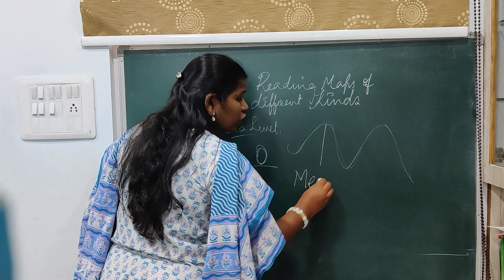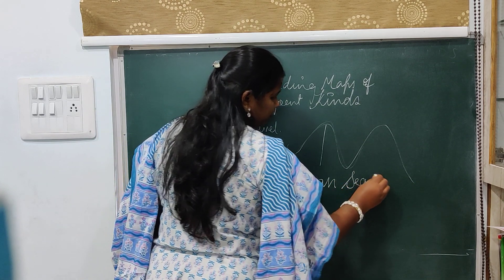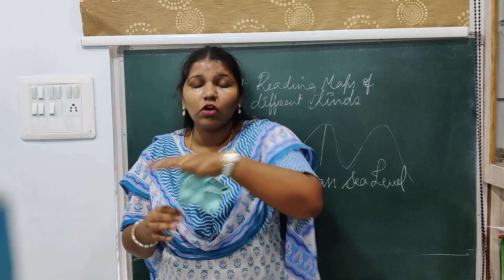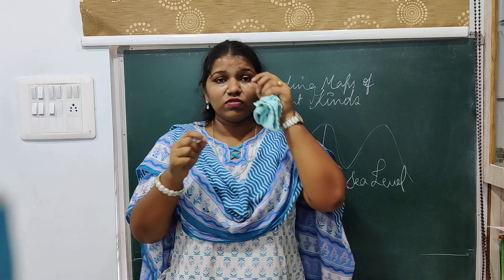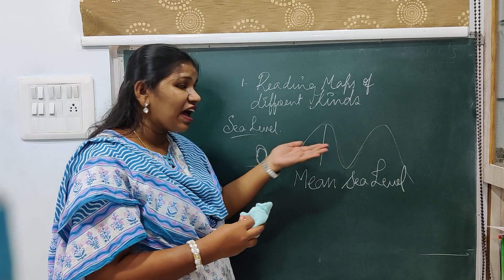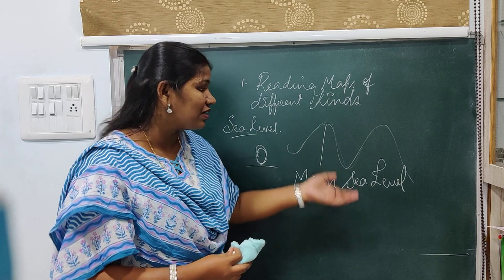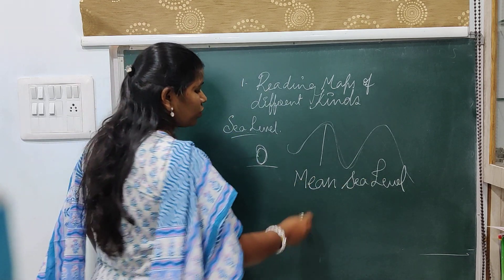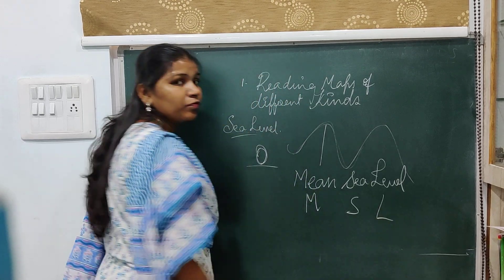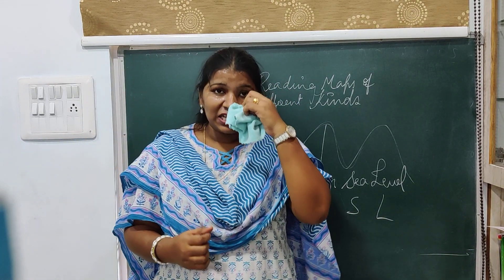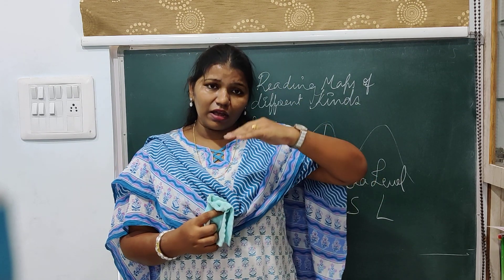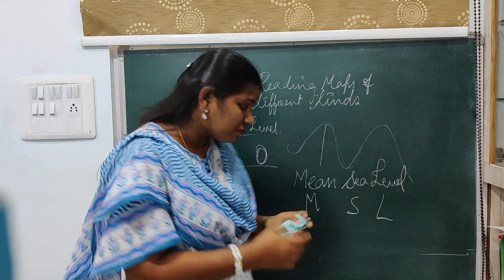They took the average of all those ups and downs — the tides and waves — and that average measure is what we call the Mean Sea Level. We call it Mean Sea Level, or in short, MSL. That Mean Sea Level helps us to calculate all heights.